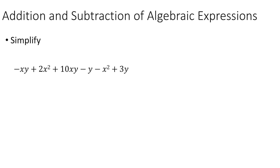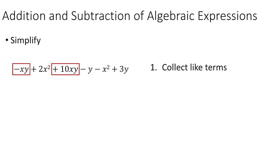For this next example, let's do more than just identify the like terms — let's follow it through and simplify. The first thing is to figure out which terms are like terms. We've got an xy term, an x squared term, another xy term, a y term, another x squared term, and another y term. Remember, you don't have to pay attention to the coefficients at this point. We do have three matching pairs: xy pairs, x squared pairs, and y pairs.